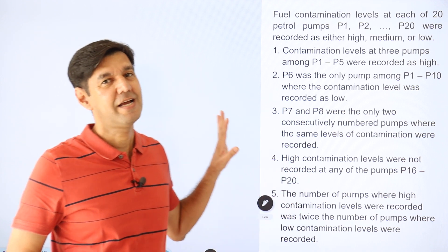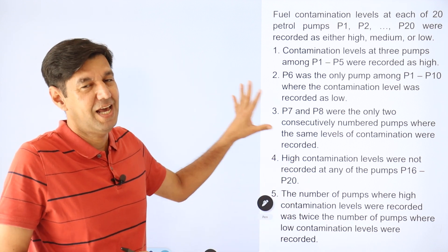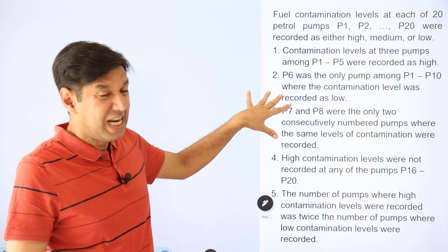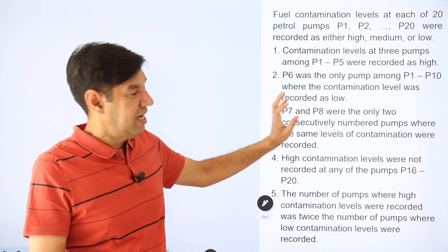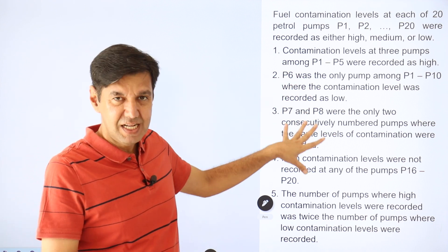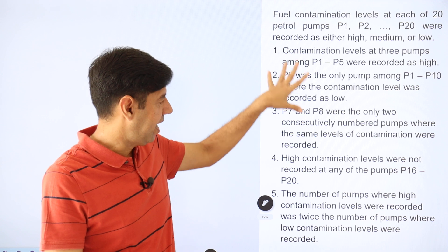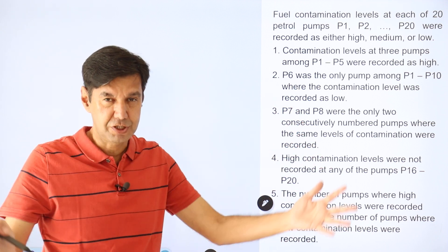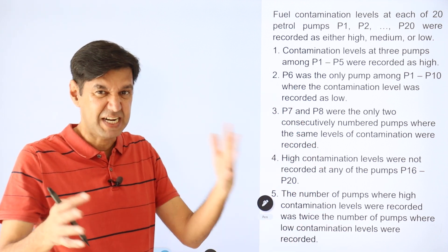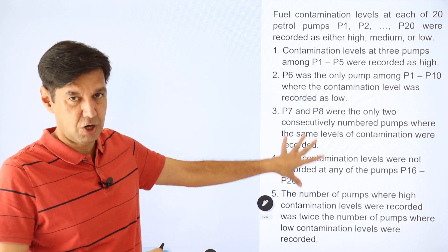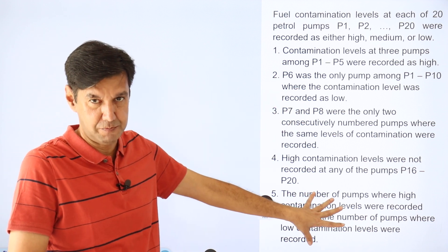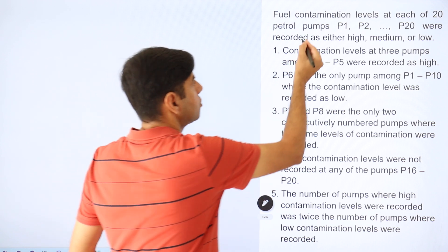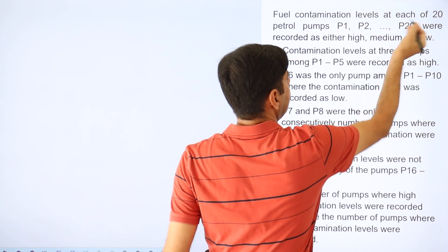A typical CAT-level LR set — a little unusual, seems a little easy, but when I reach the end and put the questions together, I find it is more challenging than it seems and could end up wasting quite a lot of time. There are 20 pumps and the contamination level is either high, medium, or low.